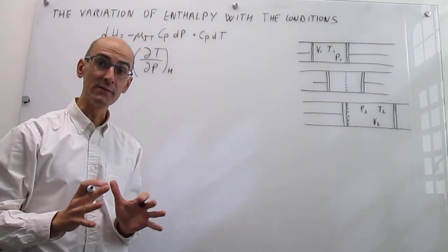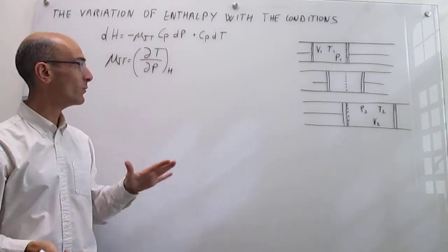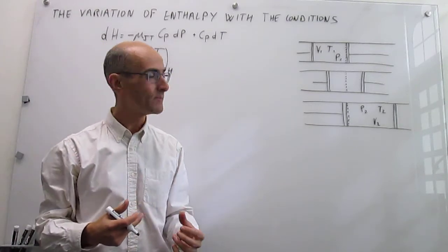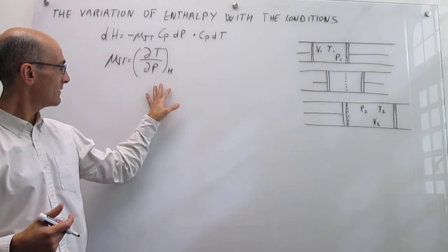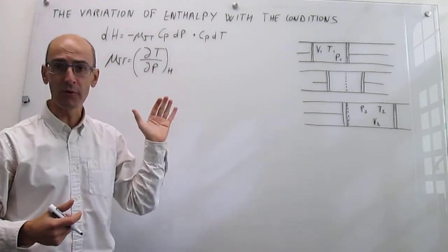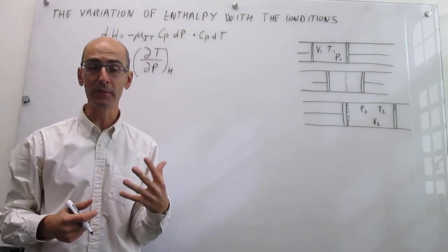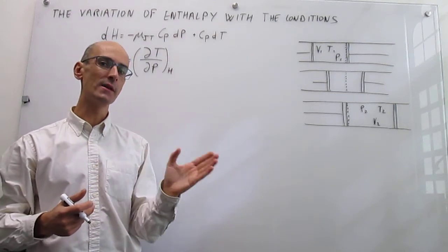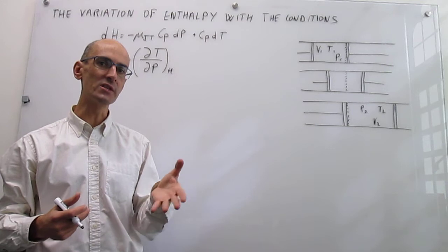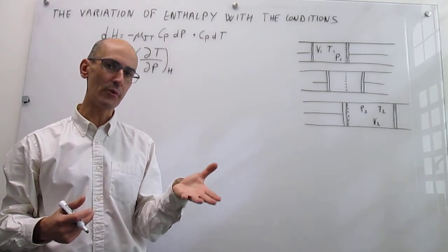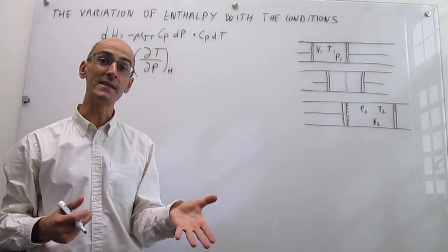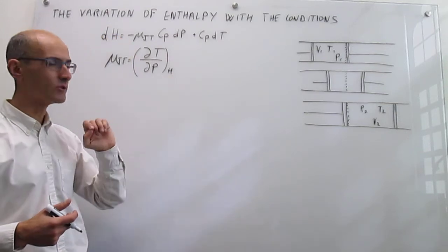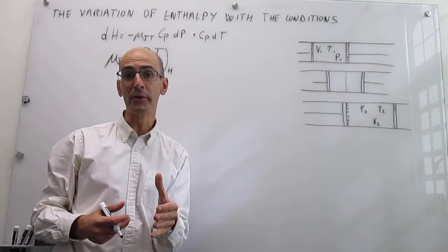The purpose of this video is to learn more about this coefficient and how you would determine it. We are going to do this for a gas because those things tend to be simpler. Essentially, we are trying to see how the temperature of a gas changes when you change its pressure in a process that is isenthalpic — constant enthalpy. That is our starting point.